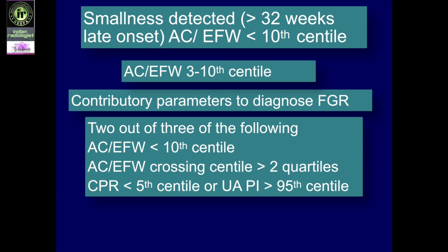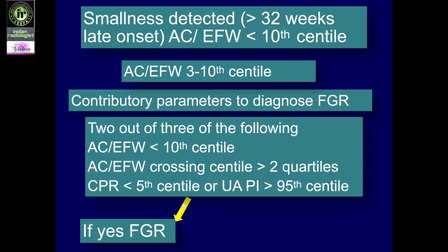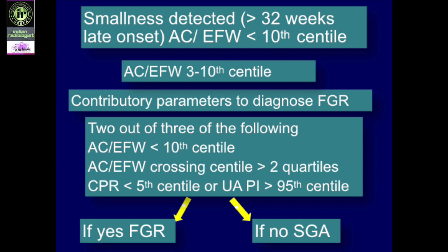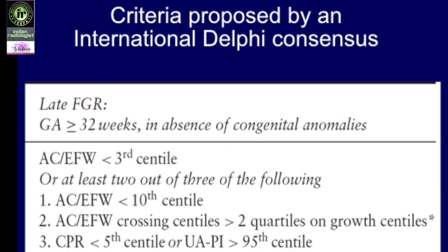A quartile is 25 centile points, so falling more than two quartiles means falling more than 50 centile points. If the Doppler parameter is abnormal and centile-crossing is detected, it is called FGR. Two of these three criteria confirm FGR; if not present, it is SGA. These are the criteria from the international Delphi consensus for late onset FGR: either the absolute solitary parameter of severe smallness, or at least two out of three contributory parameters.